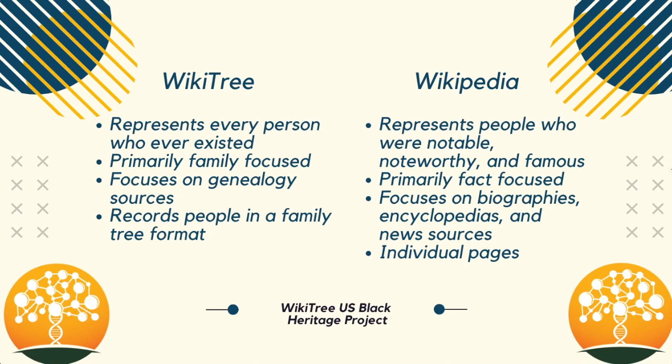WikiTree focuses on genealogy sources such as birth, marriage, death, and census records. Wikipedia focuses on biographies, encyclopedias, and news sources such as newspapers for their information. WikiTree records people in a family tree format, whereas Wikipedia only has individual pages that may have links to other pages.